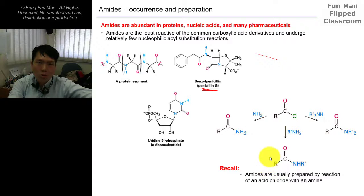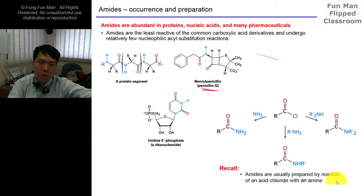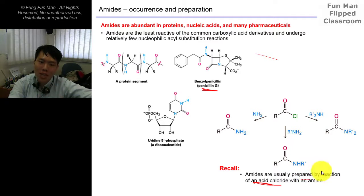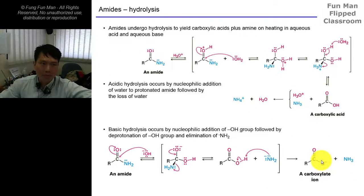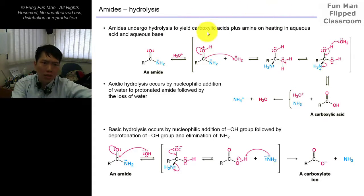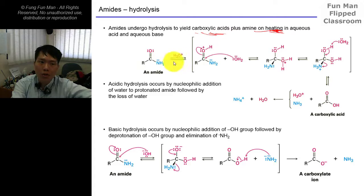How do we prepare amides? We'll go through that next lecture, but here's a short preview. Amides are usually prepared by the reaction of acid chloride - we like to use this because it is very reactive and the reaction goes almost 100% - with an amine. Amides also undergo hydrolysis on heating to give carboxylic acid plus amine. Take note: you need heat for it to occur.